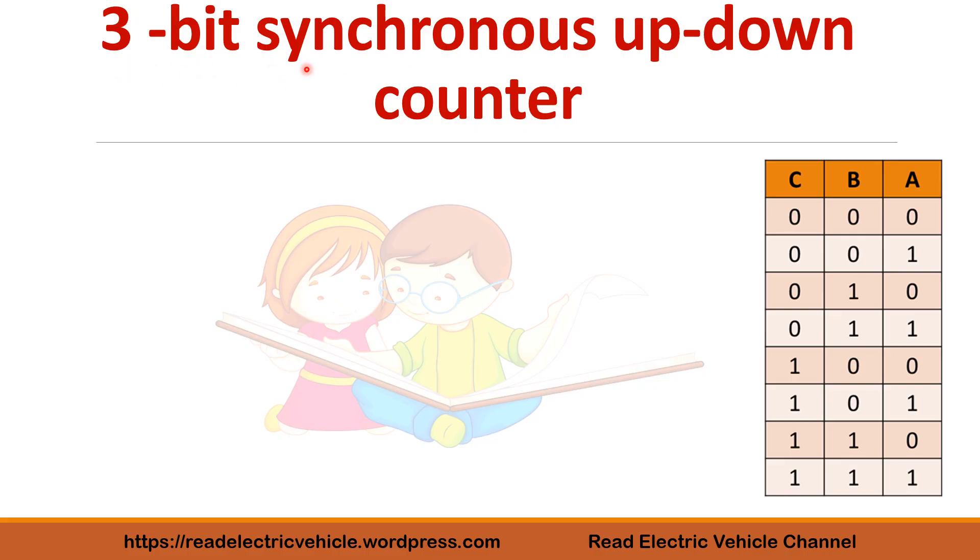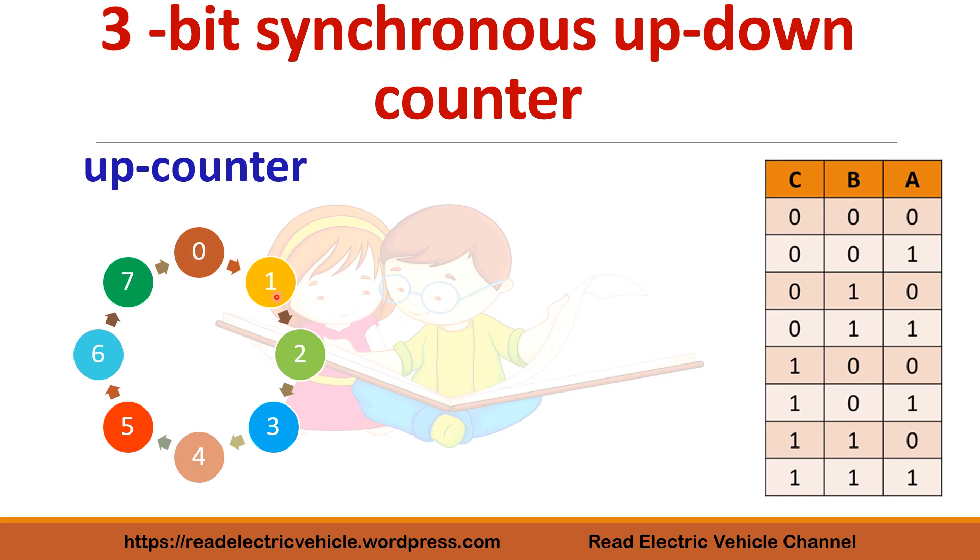A 3-bit counter has 8 states total, from 0 to 7. If it is an up counter, after 0 the next state will be 1. It counts in the upward direction: after 1 you get 2, after 2 it goes to 3, and so on.